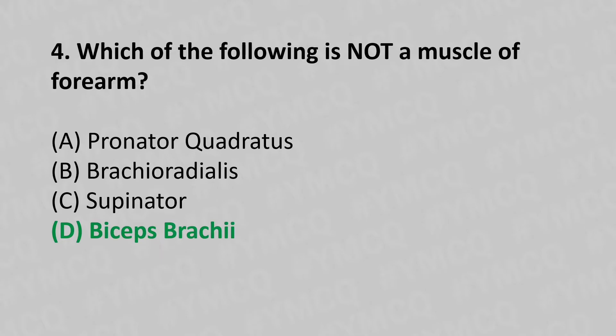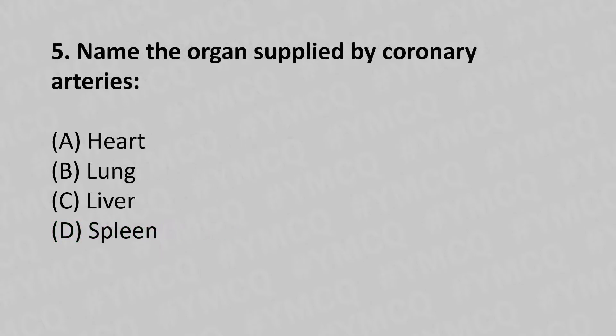Moving to our fifth question. Name the organ supplied by the coronary artery. Option A, heart. Option B, lung. Option C, liver. Option D, spleen. And the answer is Option A, heart.